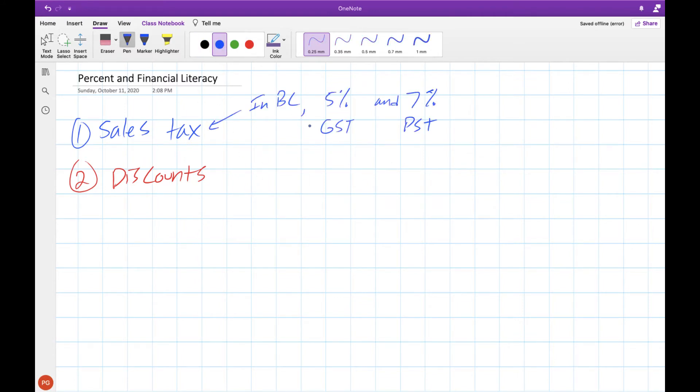In BC, there are two sales taxes, 5% which goes to GST, this is for the federal government, so like the government of all of Canada, 5% of all sales, they take a tax on that, and then PST, that's provincial sales tax, this one is 7% and this goes to the government in British Columbia specifically.